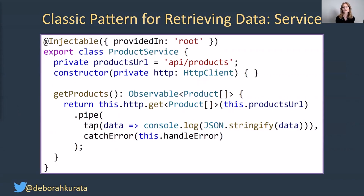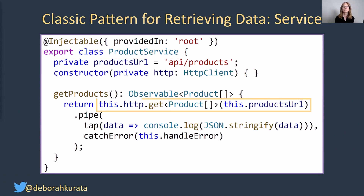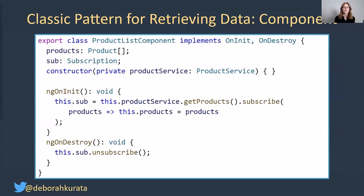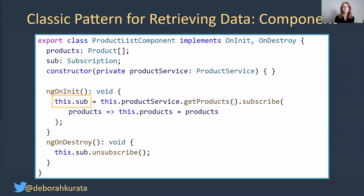Here's our classic pattern for retrieving data. Here's our service code. We have a getProducts method that issues an HTTP GET request and returns an observable of product array. In our component, we retrieve the data when the page is loaded, so in ngOnInit is where we do our subscribe. We store that subscription so that when the page is unloaded in our ngOnDestroy, we can unsubscribe.